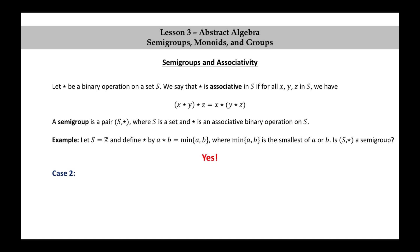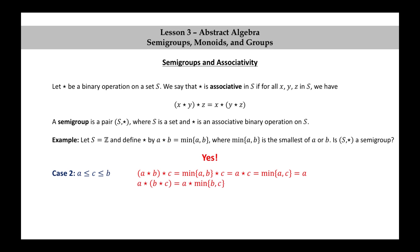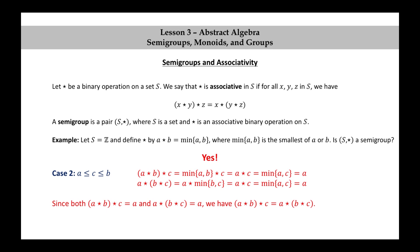Let's look at another case: A is less than or equal to C and C is less than or equal to B. In this case, (A star B) star C equals min(A, B) star C, which is A star C, since A is less than or equal to B. And A star C equals min(A, C) which is A since A is less than or equal to C. Now A star (B star C) equals A star min(B, C), which is A star C since C is the smaller of B and C. And A star C equals min(A, C) which is A. So again both sides equal A.